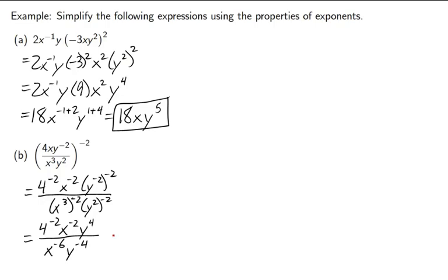So, next, let's subtract our exponents. 4 to the negative 2 stays there. We get an x to the negative 2 minus negative 6. Be careful when all these negatives float around. Put parentheses if you need to. We've got y to the 4 minus negative 4. So, we get 4 to the negative 2, x to the positive 4, y to the positive 8.